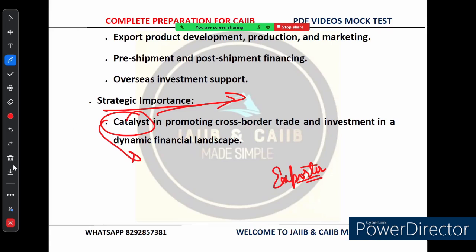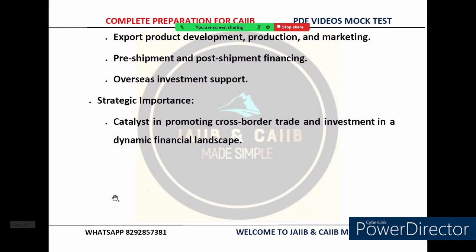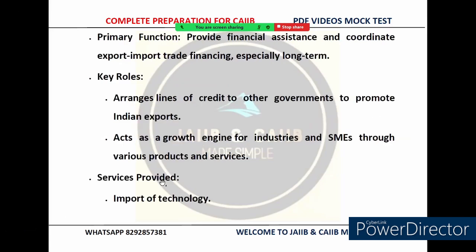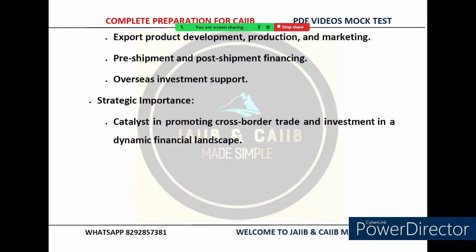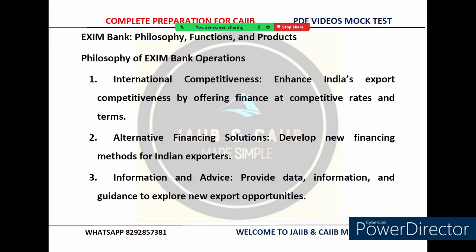To summarize the key points covered: EXIM Bank arranges lines of credit and acts as a growth engine for SMEs. Its services include import of technology, export product development funding, pre-shipment and post-shipment finance, and overseas investment support. Strategically, EXIM Bank is a catalyst for promoting cross-border trade and is much more than a financial institution — it is a key player in India's international trade ecosystem.